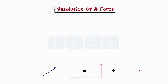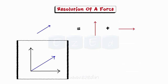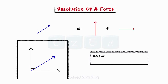The simplest way to resolve a force is to resolve it into two components along the horizontal and the vertical direction respectively. As seen in the above example, these components are perpendicular to each other. Hence, they are known as the rectangular or perpendicular components of a force.